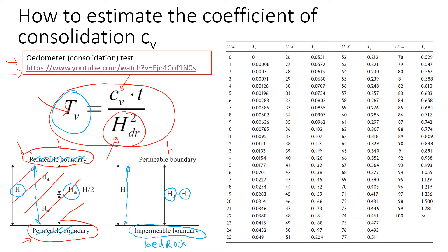The time factor Tv correlates to the degree of consolidation U (in percentage). If we know the degree of consolidation, we can easily find the time factor. For a degree of consolidation of 50%, the time factor is 0.197. For a degree of consolidation of 90%, the time factor is 0.848.